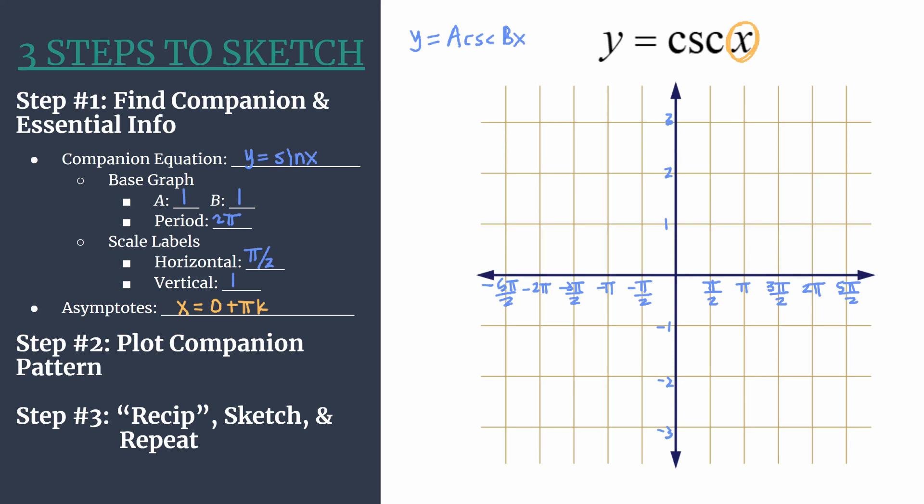For example, if k is zero, you should have an asymptote at x equals zero. If k is one, simplify zero plus π, you should have one at π. If k is negative one, you should have another asymptote at negative π. This is just a really nice way to efficiently represent all of the asymptotes of our graph. Now we're ready to move on to step two.